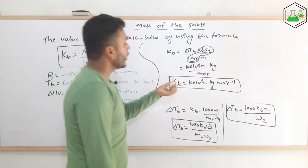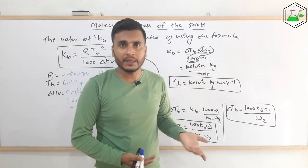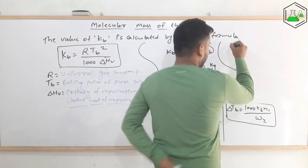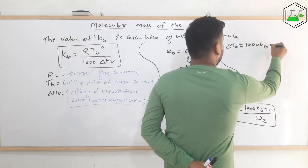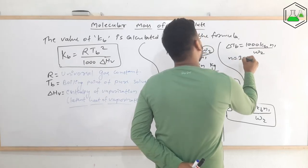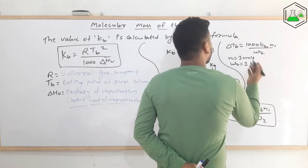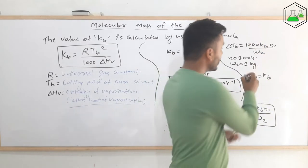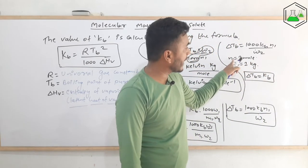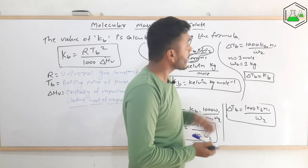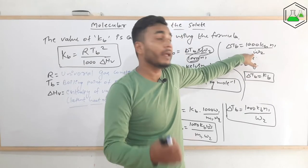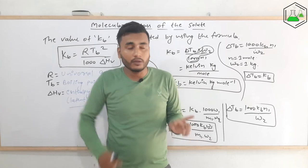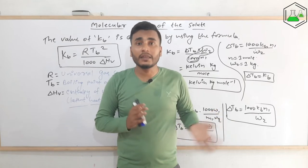What is the meaning of kb? Looking at the expression del_Tb = 1000·kb·n1 / w2: if we put n1 = 1 mole and w2 = 1 kg, then del_Tb = kb. This means: when 1 mole of solute is dissolved in 1 kg of solvent, the elevation of boiling point that results is called the molar elevation constant or ebulioscopic constant, kb.